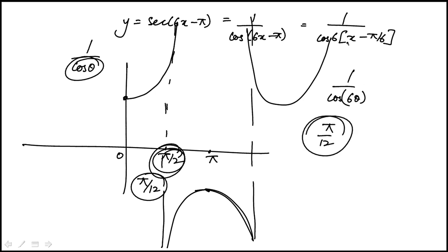Now we also have this shift. This is a horizontal shift to the right, because we have a minus pi over 6. So this vertical asymptote will shift to the right by pi over 6.